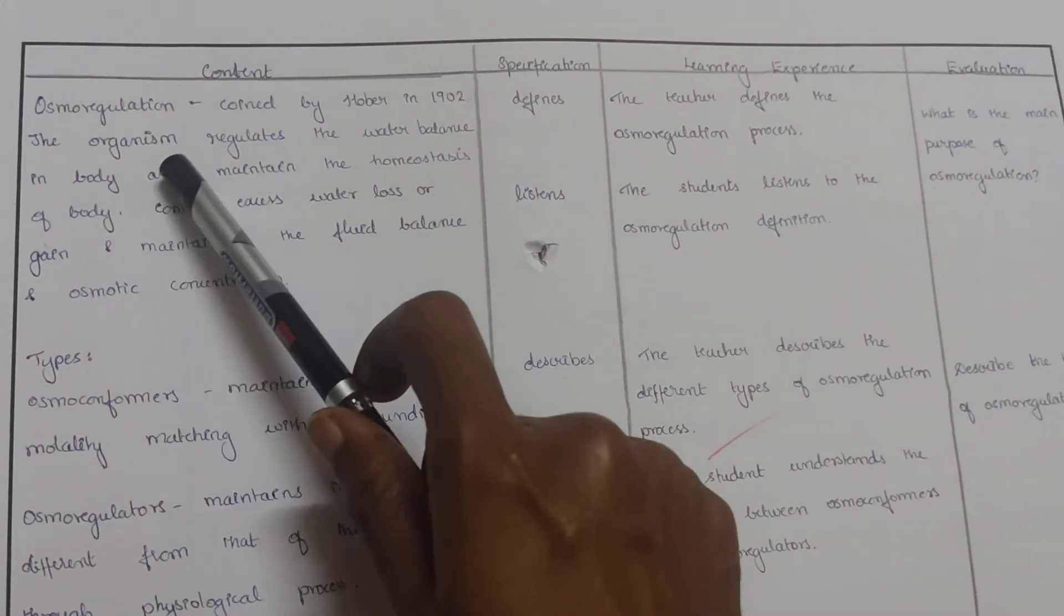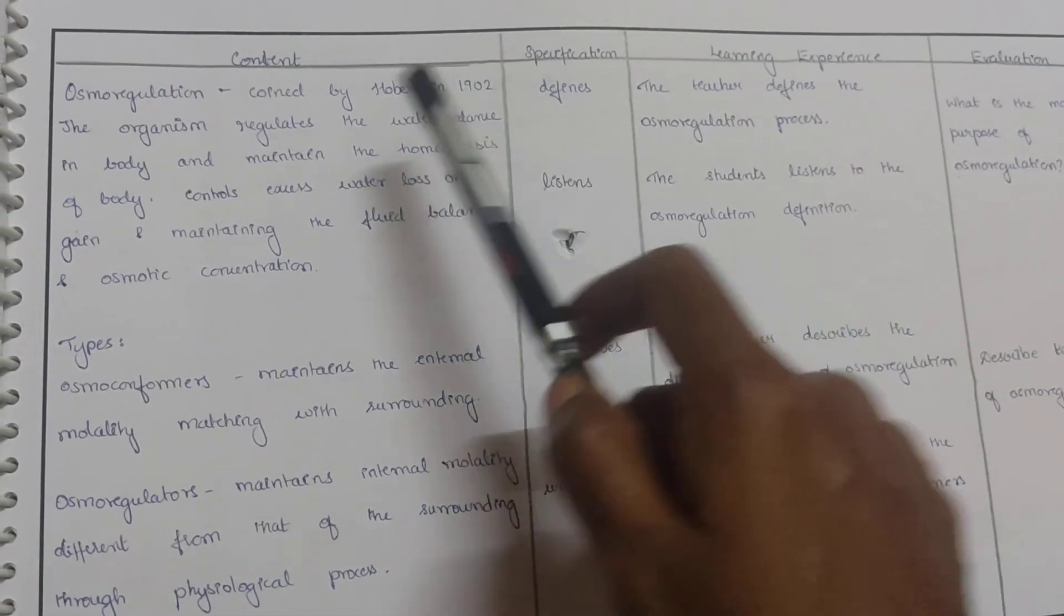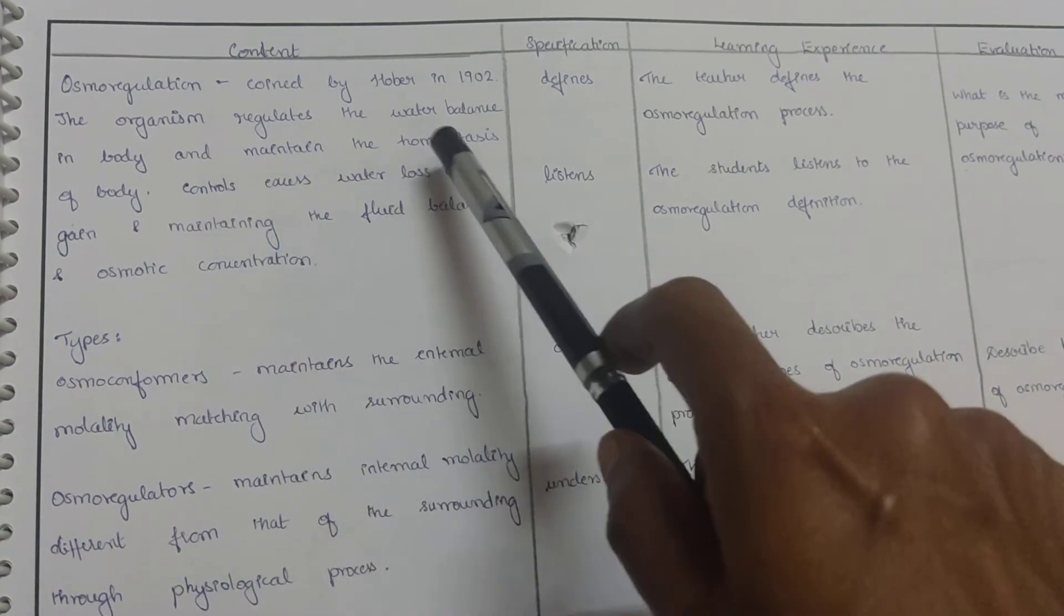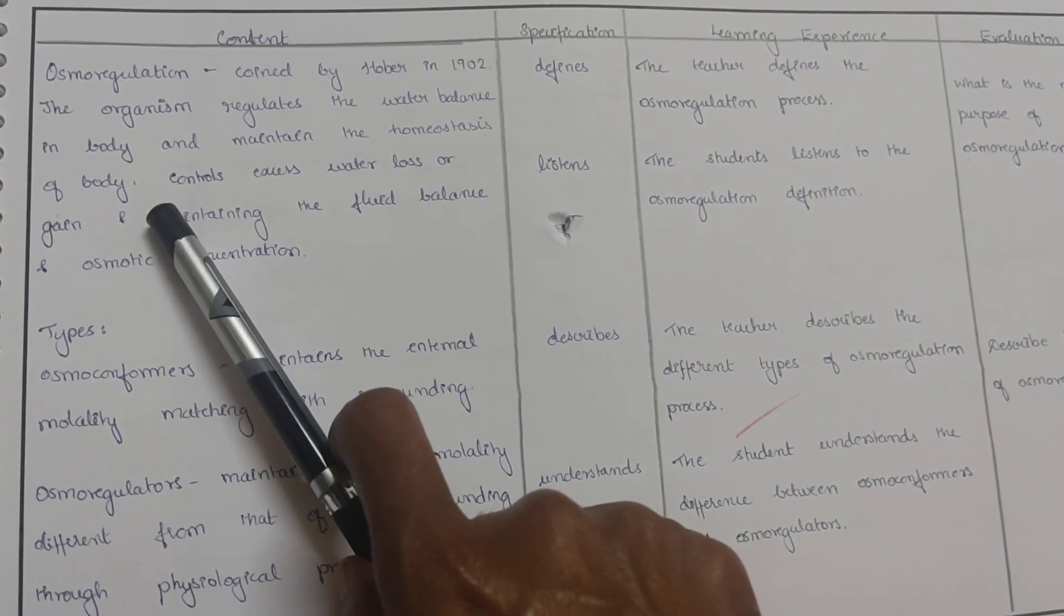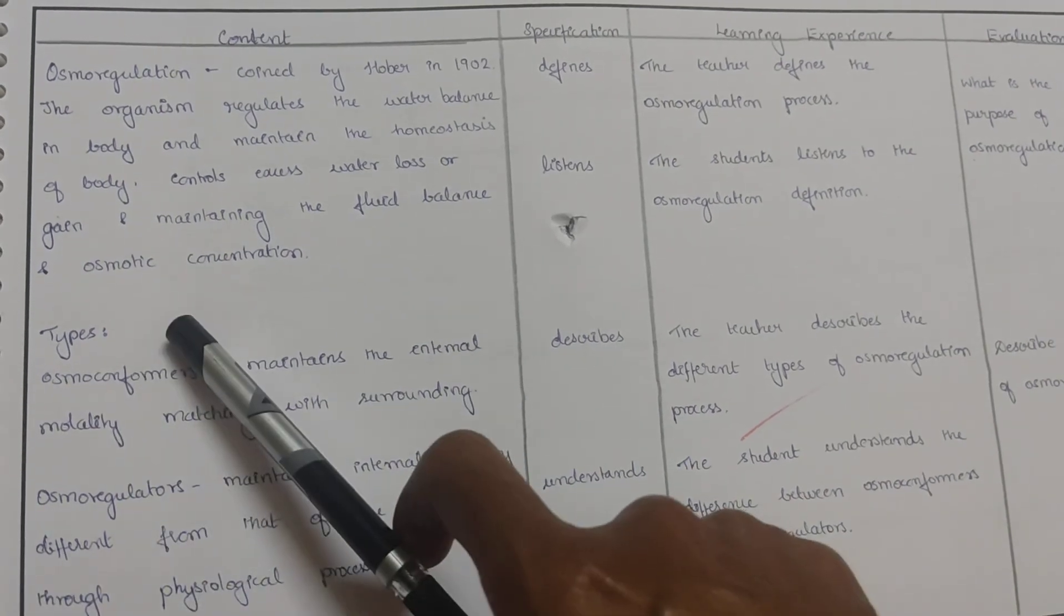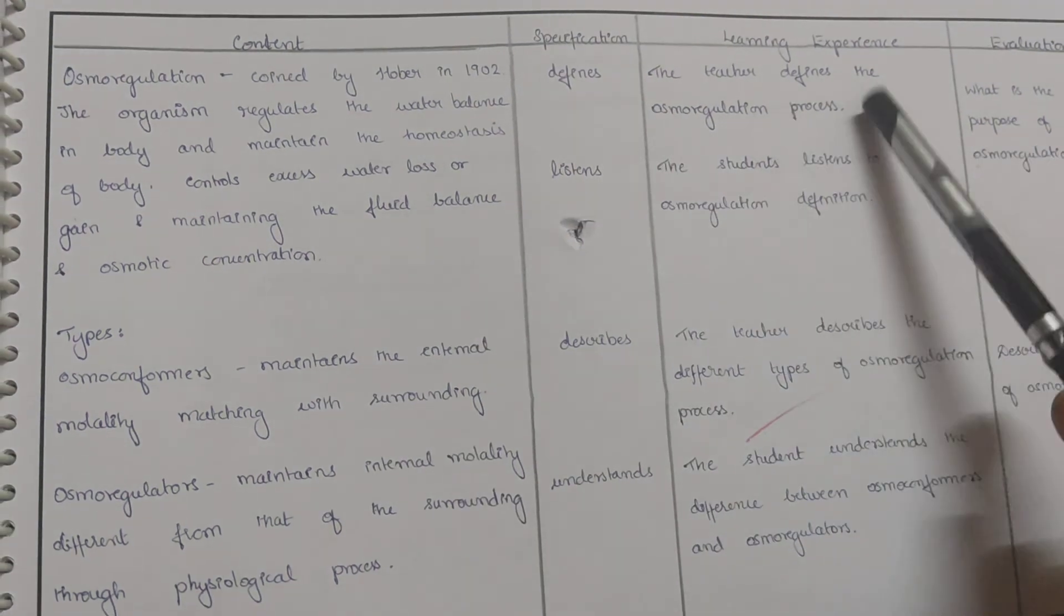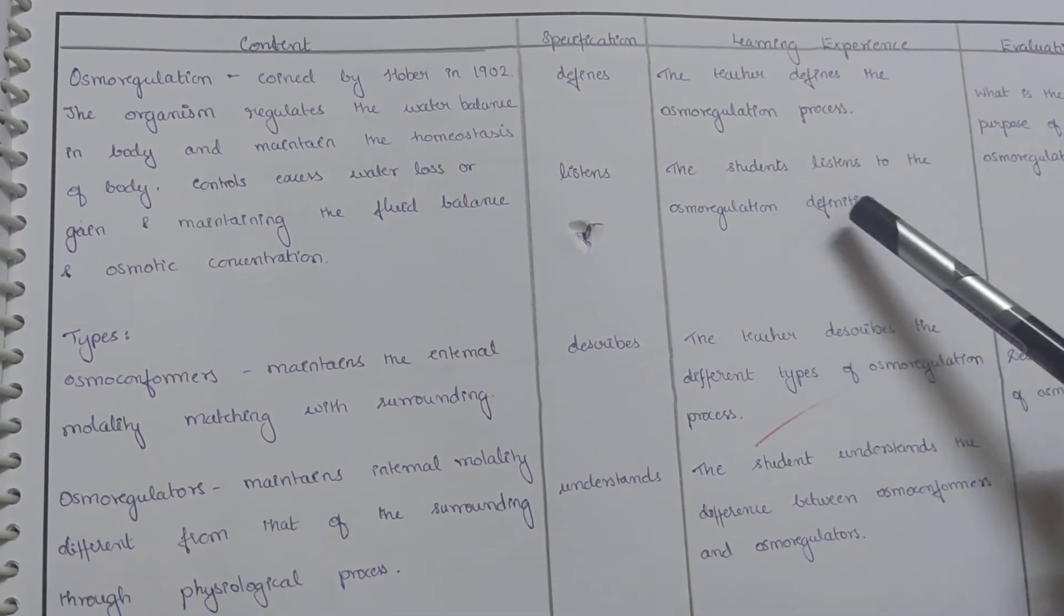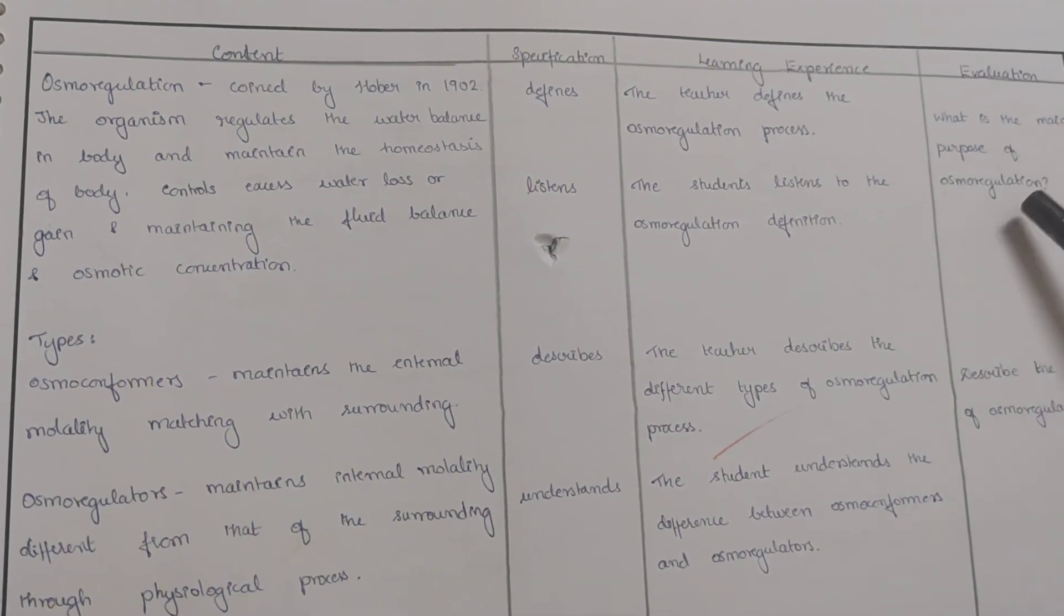Now we move on to the osmoregulation which is coined by Hauber in 1902. The organism regulates the water balance in body and maintains the homeostasis of body. It controls the excess water loss or gain and maintains the fluid balance and osmotic concentration. The teacher defines the osmoregulation process and the student listens to the osmoregulation definition. What is the main purpose of osmoregulation?